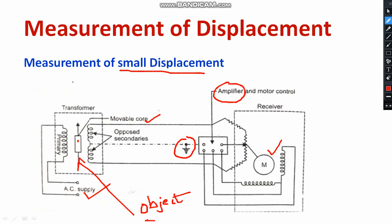The movable object is directly connected to the movable core. With respect to the movement of the object, the movable core also moves upward and downward. Now, looking at the secondary side, the induced EMF in the secondary side is going to depend on the movement of the core. With respect to the displacement, the value of induced EMF at the output side gets varied — it is a statically induced EMF because it is a transformer.